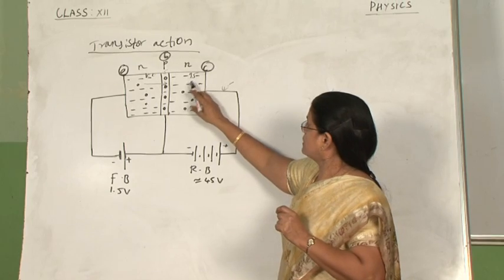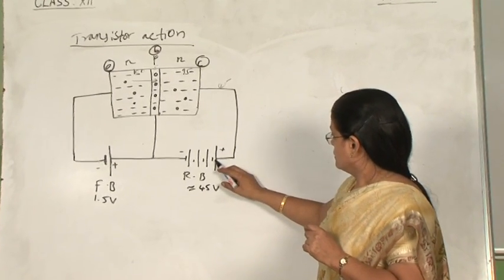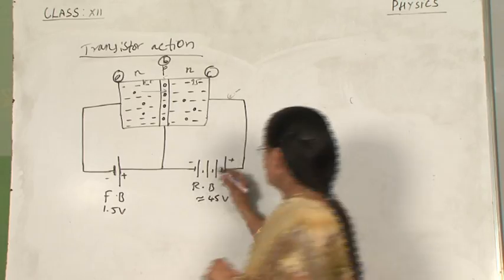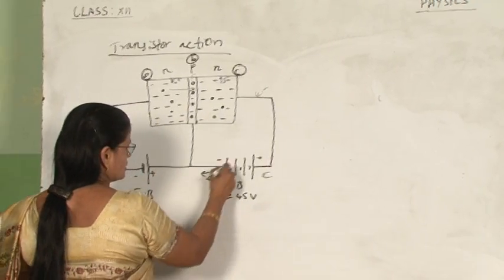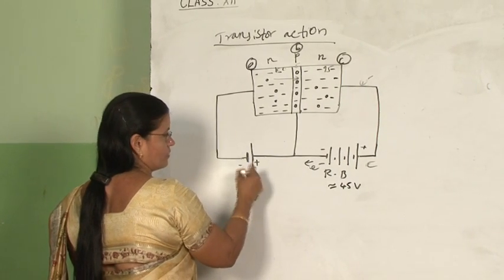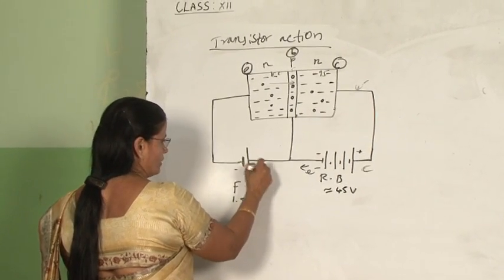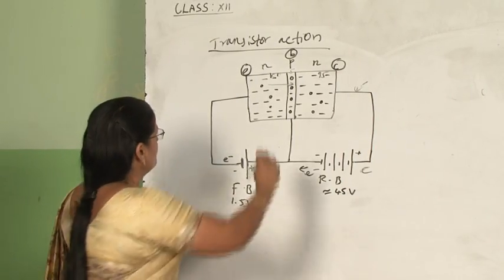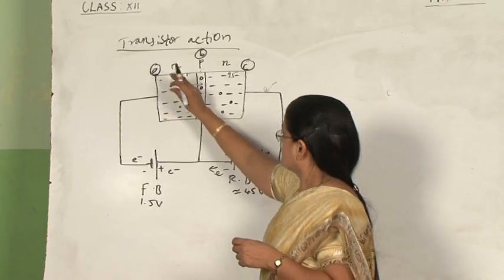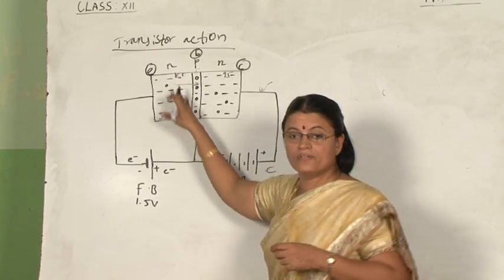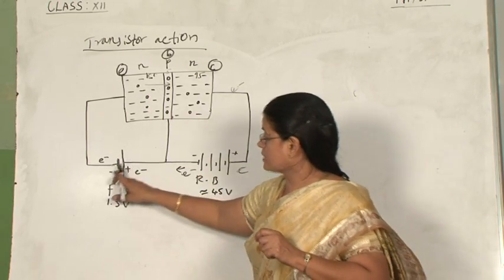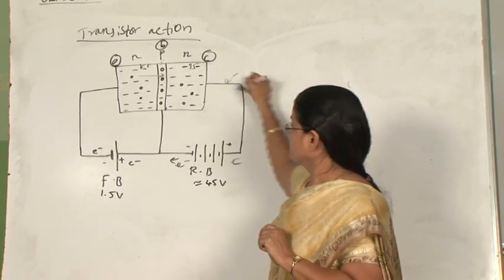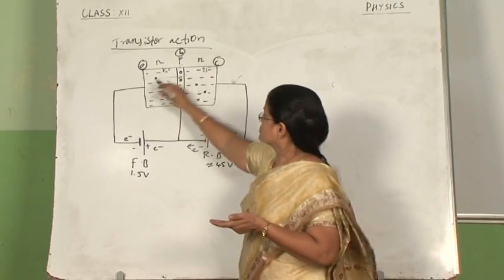Suppose one electron is entering the collector section — it will flow to the positive terminal of the reverse bias battery. When one electron enters here, one electron will leave the negative terminal and come to the positive terminal of the forward bias cell. So when one electron comes to the positive terminal, one electron will leave and go to the n-section. As electrons move from the emitter section to the collector section, the deficiency is compensated by electrons from the cell. In the outer circuit, electrons are moving and contributing to the current.